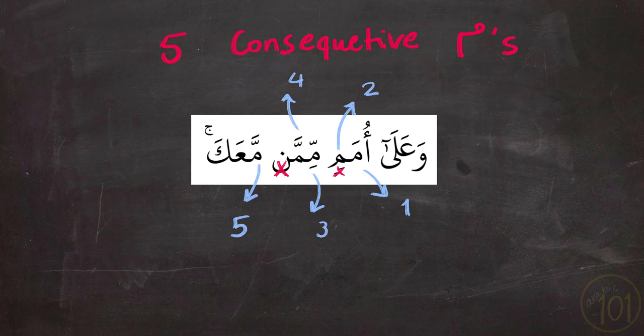وَعَلَى أُمَمٍ مِمَّمًا مَعَكَ. And in order to understand why I skipped a Tanween at the end of Umem or the Noon at the end of Mimmen, you need to check this lesson out to understand why this happened.